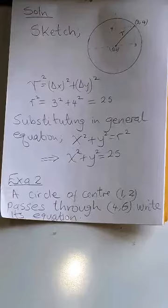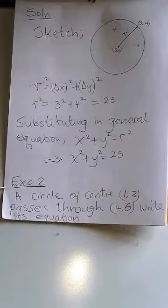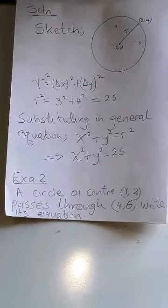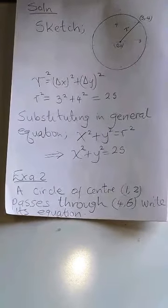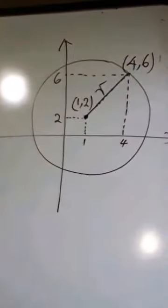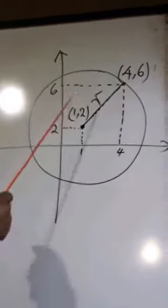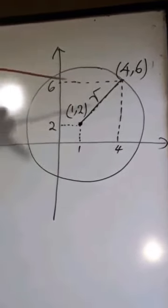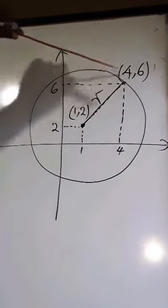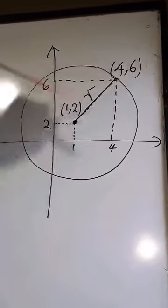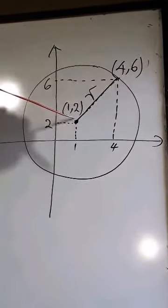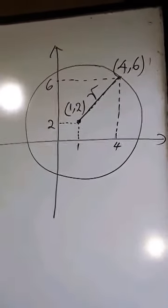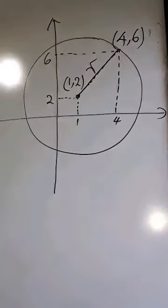Example two: a circle of center (1, 2) passes through point (4, 6) — write its equation. Here is a sketch showing a circle of radius r passing through point (4, 6) whose center is (1, 2), not (0, 0).